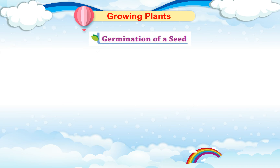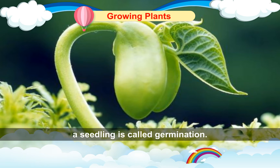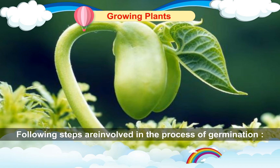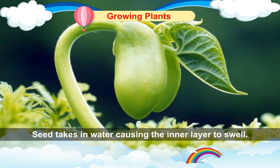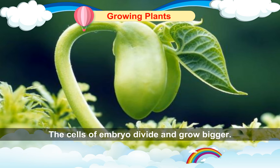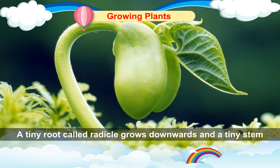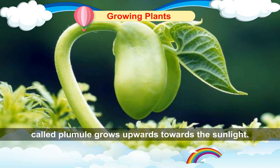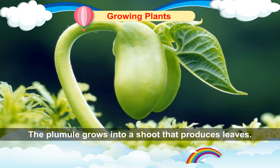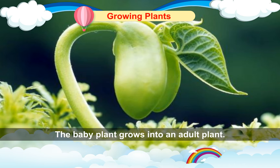Germination of a seed. The process by which a seed grows into a seedling is called germination. Following steps are involved in the process of germination. The seed takes in water, causing the inner layer to swell. The cells of the embryo divide and grow bigger. As the seed grows bigger, its seed coat bursts open. A tiny root called the radicle grows downwards and a tiny stem called the plumule grows upwards towards the sunlight. The plumule grows into a shoot that produces leaves. The baby plant then grows into an adult plant.